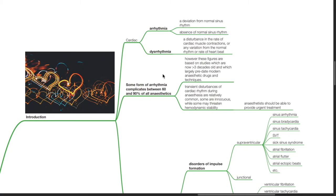Some form of arrhythmia complicates between 60 and 90 percent of all anesthetics. However, these figures are based on studies which are now more than three decades old and largely predate modern anesthetic drugs and techniques. Transient disturbances of cardiac rhythm during anesthesia are relatively common. Some are innocuous while some may threaten hemodynamic stability. Anesthetists should be able to provide urgent treatment.